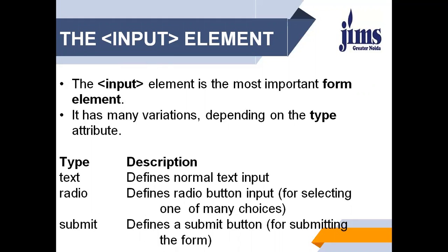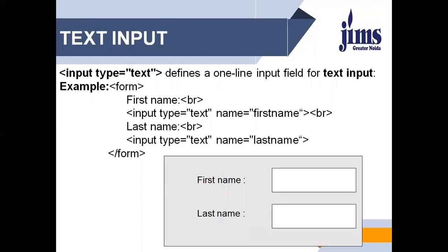For defining normal text input you use type text. For radio buttons as input you put radio — radio buttons for selecting any one choice out of many choices. Submit is for submitting the form. We will discuss them in detail in coming slides. First is text input. You have to mention input type equals text. It defines a one-line input field for text input. When placed in an HTML form, the text box permits the capture of one line of text, and the user will be able to key in any textual information.